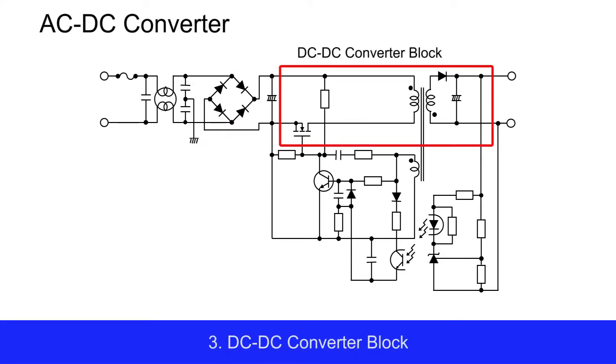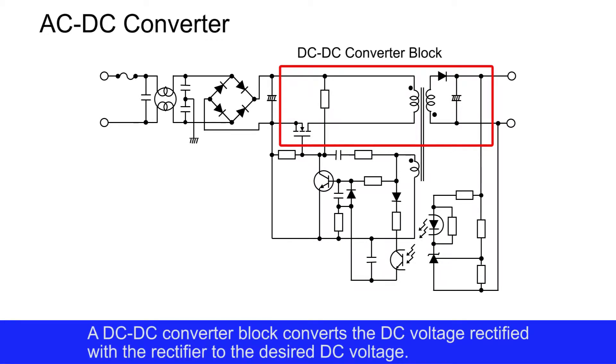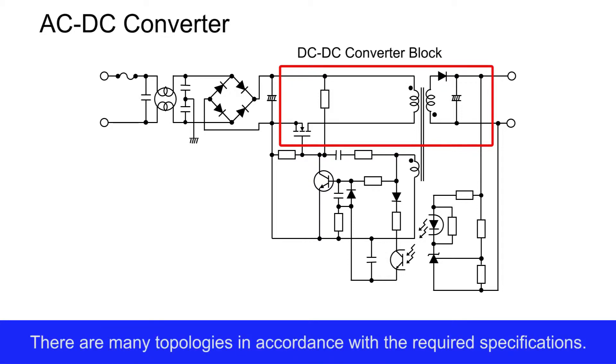Third, the DC-DC converter block. This block converts the DC voltage, rectified with the rectifier, to the desired DC voltage. There are many topologies in accordance with the required specifications.